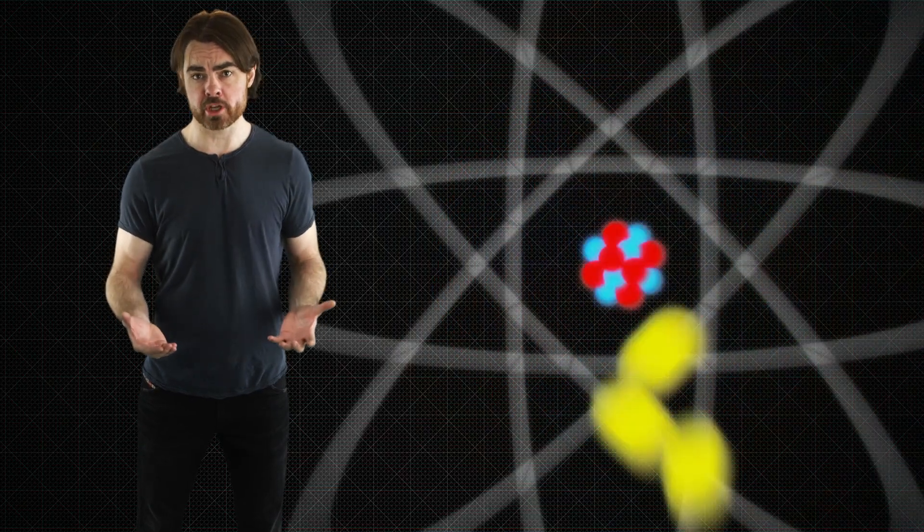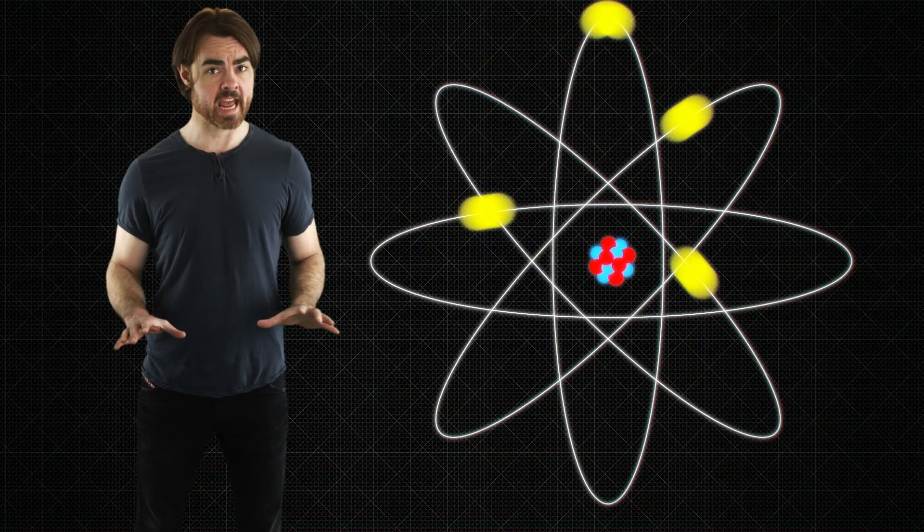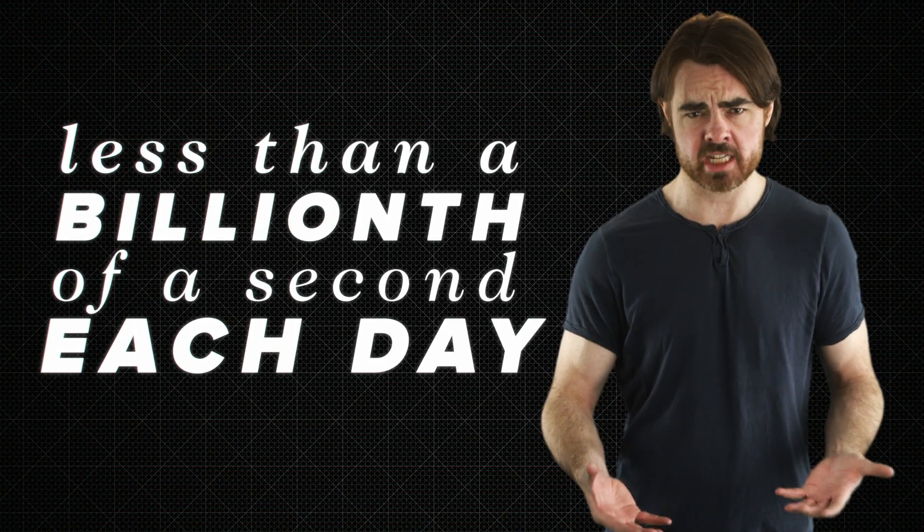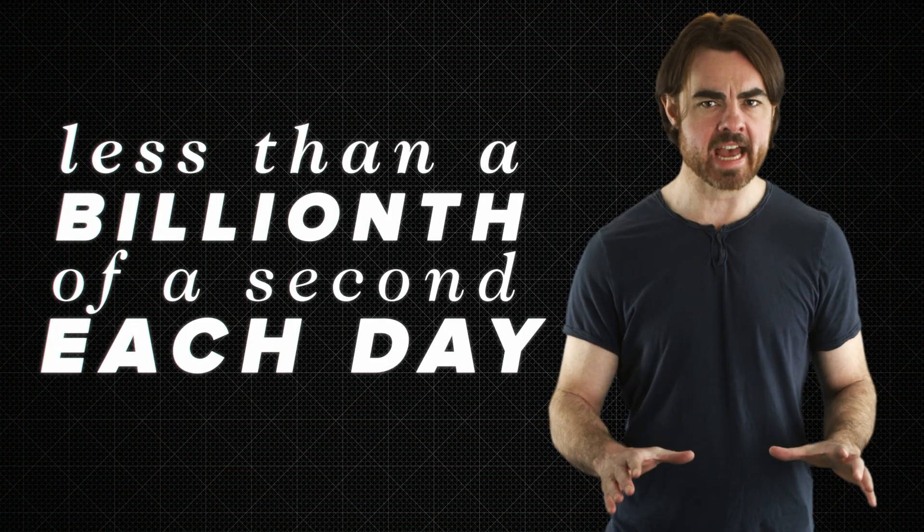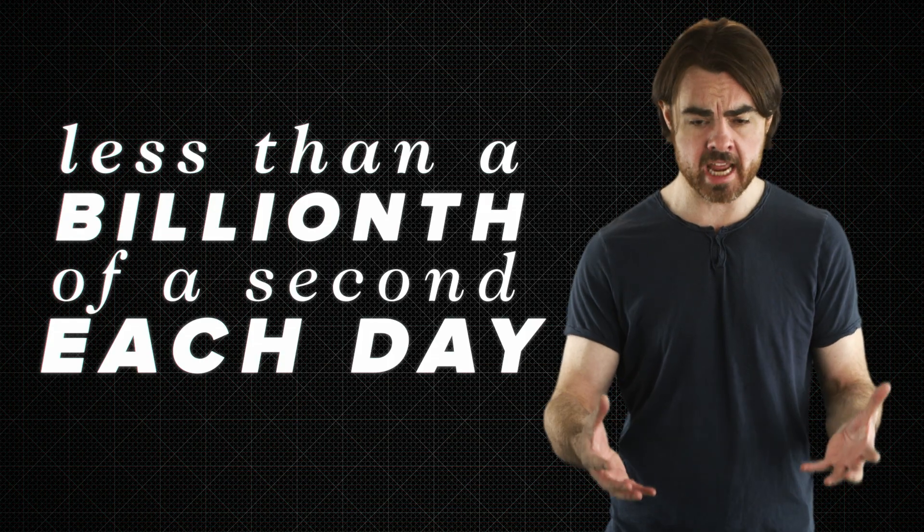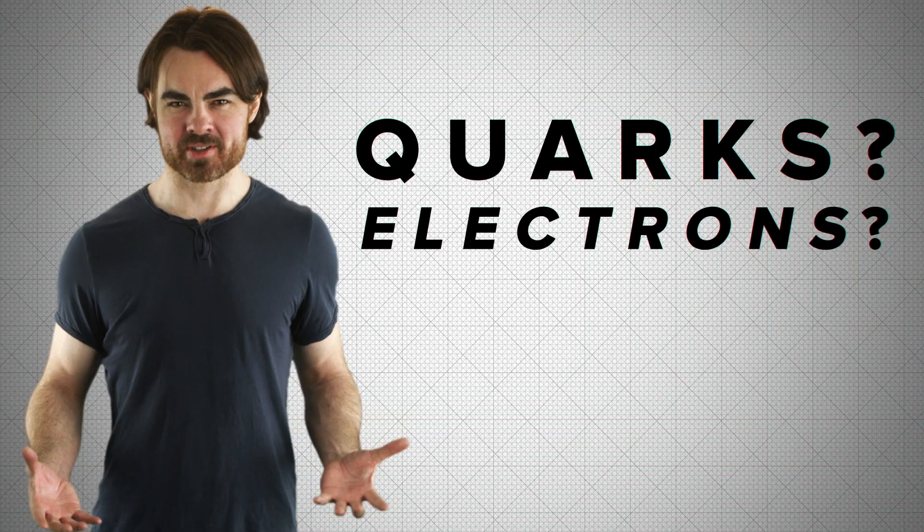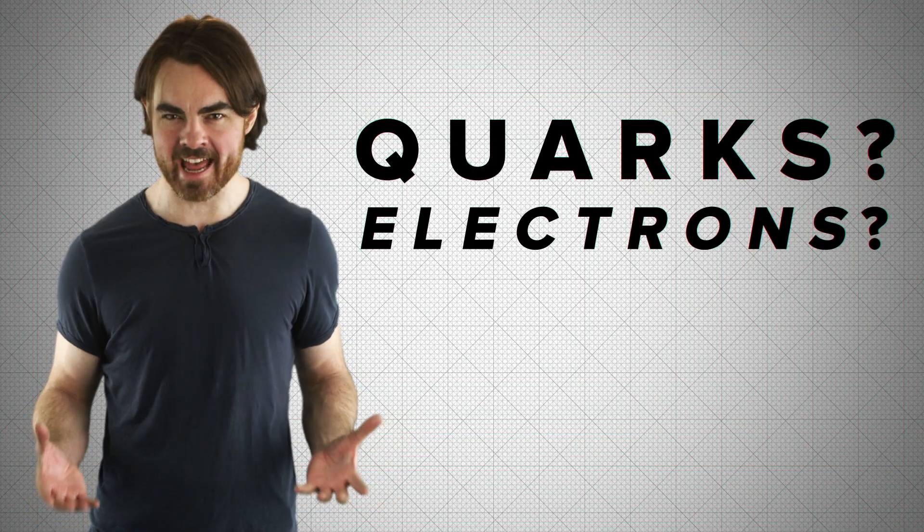But do the individual components of the clock feel the same flow of time? Down to the atoms and nuclei, yes. The most accurate clocks in the world are atomic clocks, which can drift by less than a billionth of a second each day. All of the atoms in such a clock feel the same length of a second. But what about the quarks, the electrons? This is where our conception of time starts to break down.